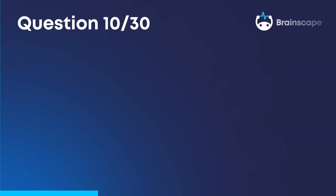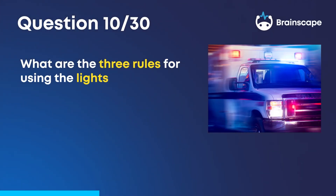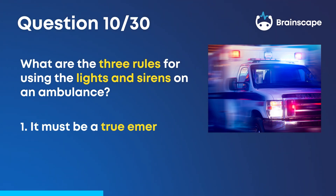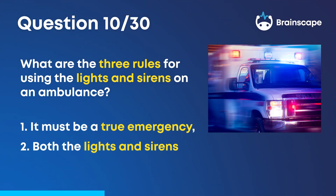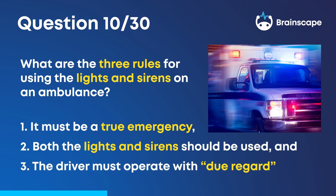Question 10. What are the three rules for using the lights and sirens on an ambulance? 1. It must be a true emergency. 2. Both the lights and sirens should be used. And 3. The driver must operate with due regard.